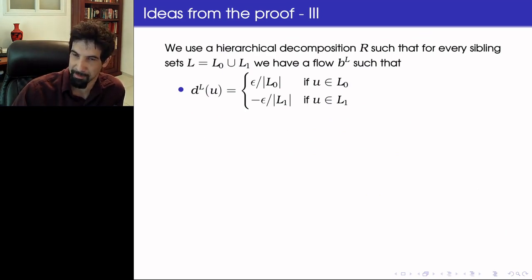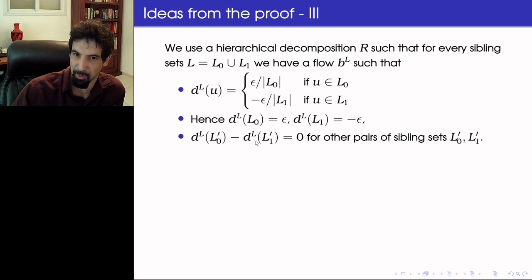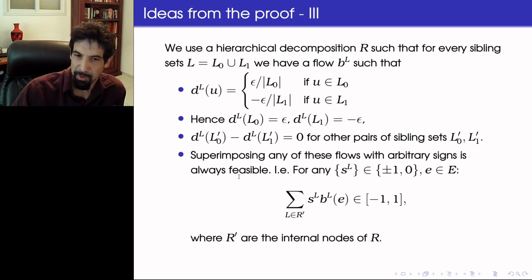We define for every pair of sibling sets a flow on the graph, which we need to find here, that has the property that the drift that it induces is drawing -ε over the size of L₁ from every vertex in L₁ and pushing it into ε over size of L₀ for every vertex in L₀. This drift causes indeed a drift difference between L₀ and L₁ of 2ε, but the drift difference between every two siblings in the tree except for these two will be zero. So all of these drifts will be orthogonal. And we want it to be such that superimposing any of these flows with arbitrary signs will always be feasible, so that for any choice of signs the total biasing of every edge will be between -1 and 1. And if we can do this, then using the concentration estimate we've seen before, we will have maximum gap of 1 over ε log N.